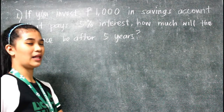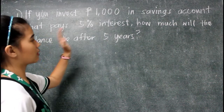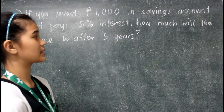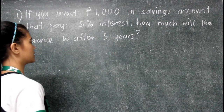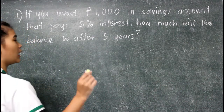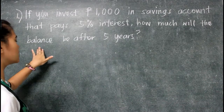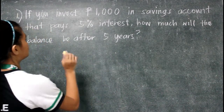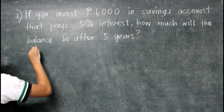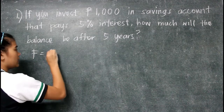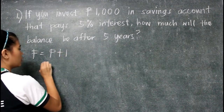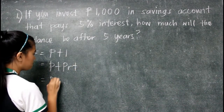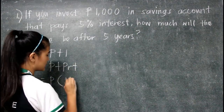Now we'll have an example. If you invest 1,000 pesos in a savings account that pays 5% interest, how much will the balance be after five years? Understanding the problem, we are going to find the balance, which means we are going to find the future value. The future value formulas are P plus I, P plus PRT, or P times 1 plus RT.